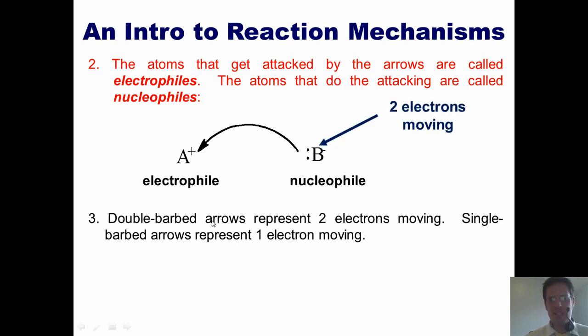So in this particular example, because I've got two barbs on the end of this arrow, it means there are two electrons moving. In an example over here, if I have a single electron moving, I just draw a single bond over here like a fish hook.